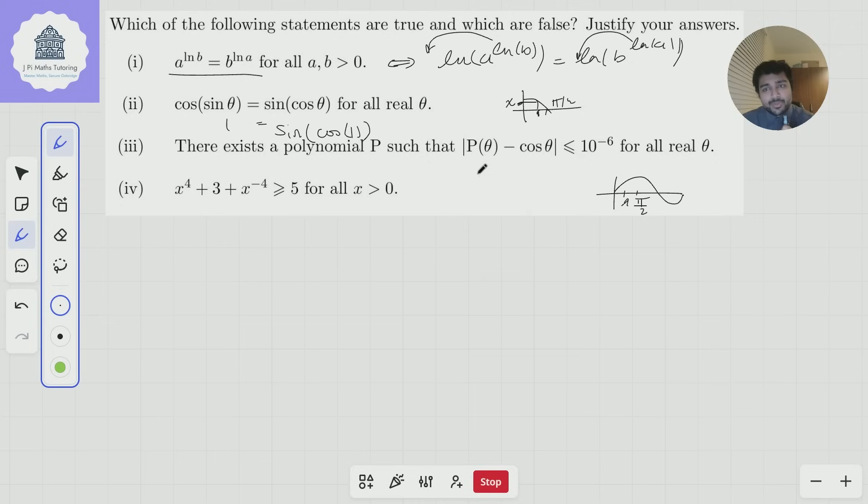Statement 3. There exists a polynomial P such that |P(θ) - cos θ| ≤ 10^(-6) for all real θ. Now, this one is a little bit more difficult because, you know, if this statement is false, which it is,